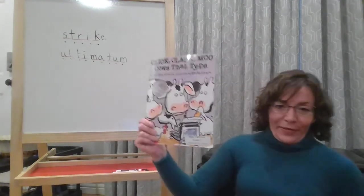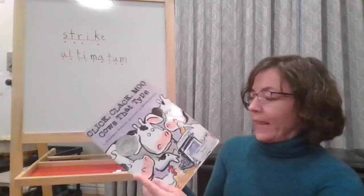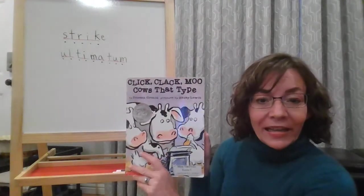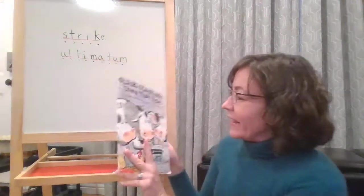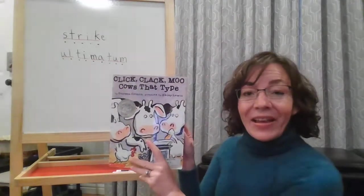So let's read the story and see if we can hear those words and learn a little bit more about what they mean. Click Clack Moo. Cows That Type. This is by Doreen Cronin. And pictures are by Betsy Lewin.